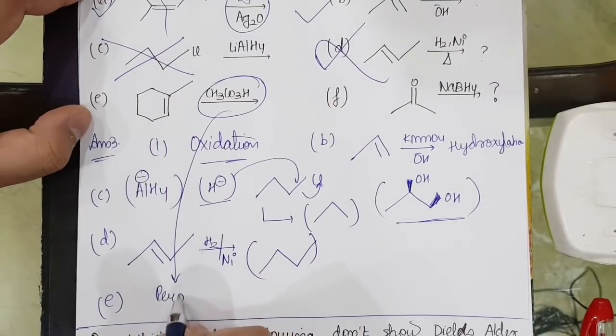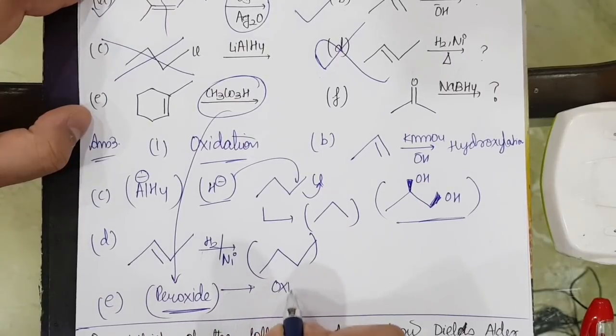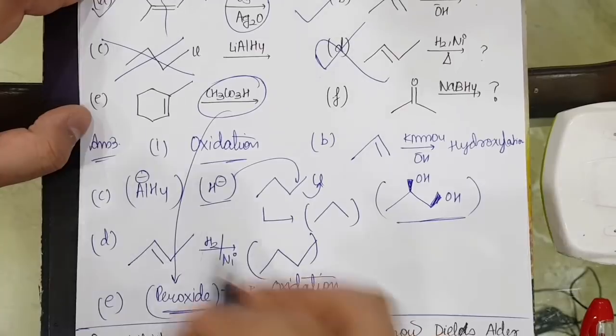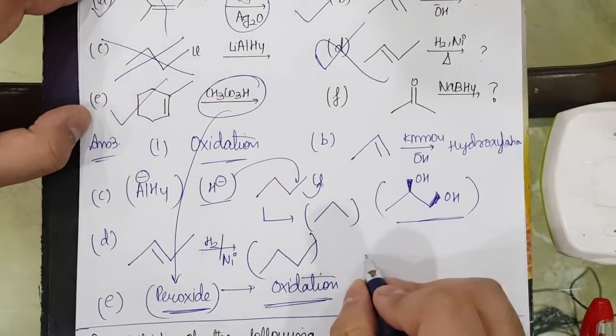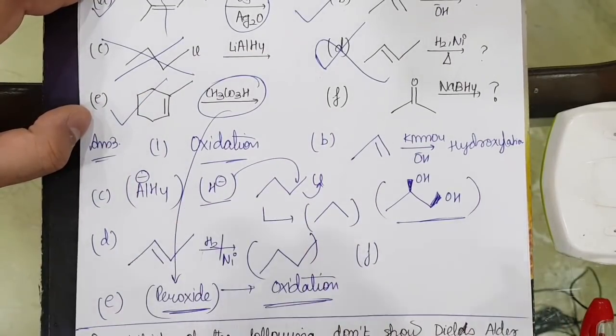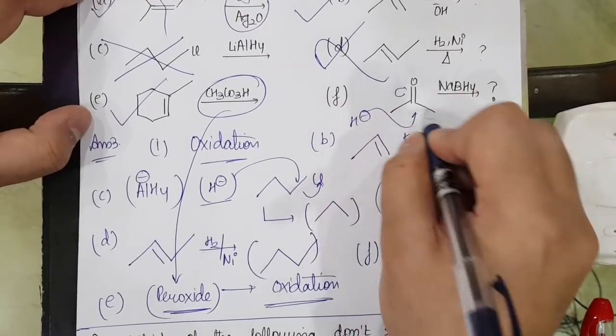In number E, what is happening? CH3-C double bond OH, which is peroxide. Peroxide, you can understand, has nascent oxygen. So that does oxidation. This is also correct.